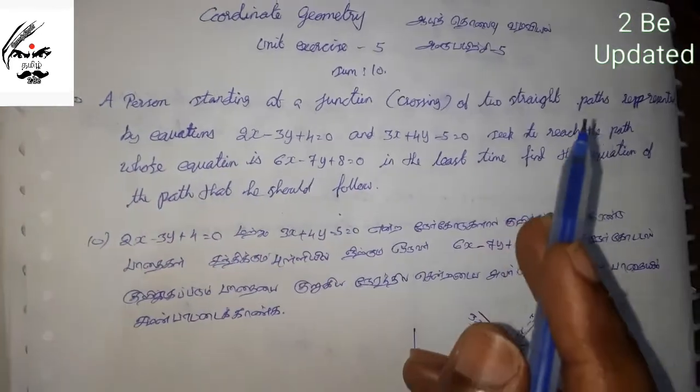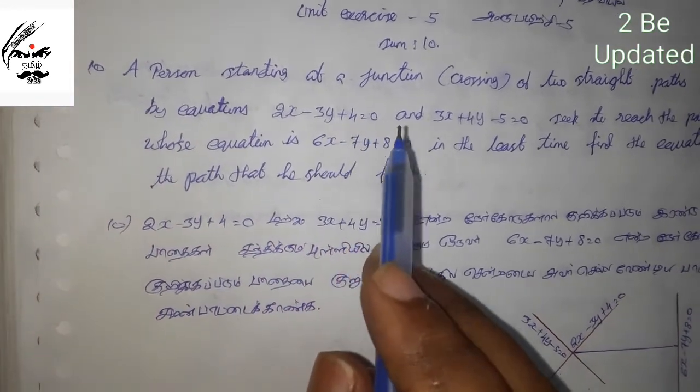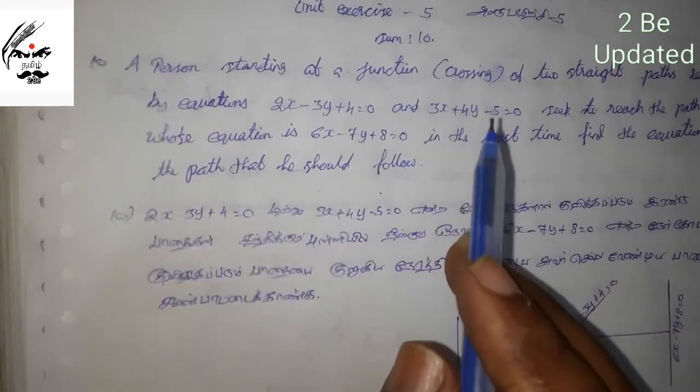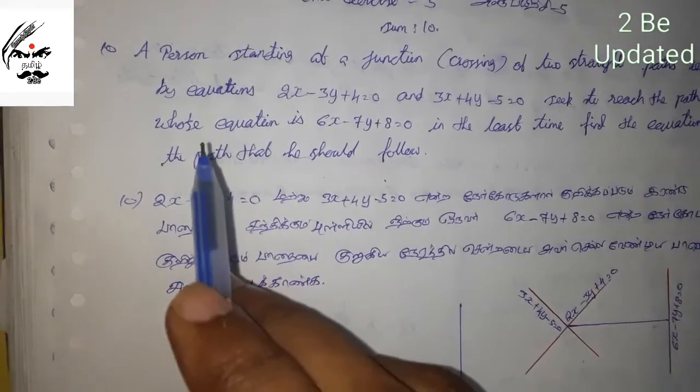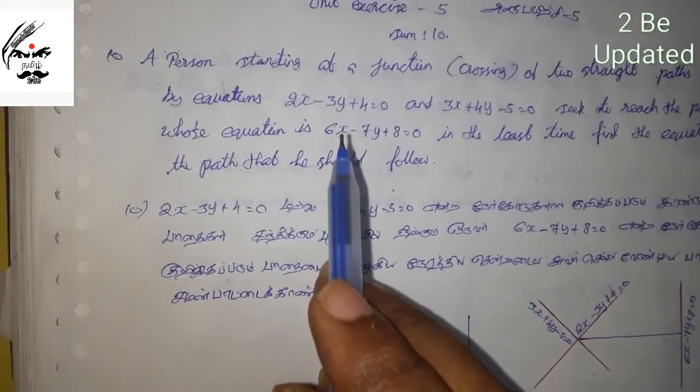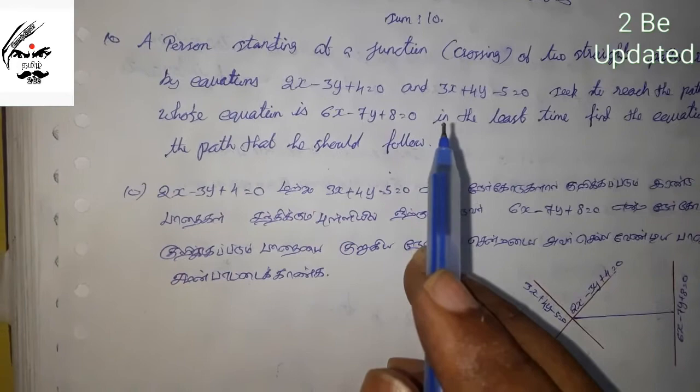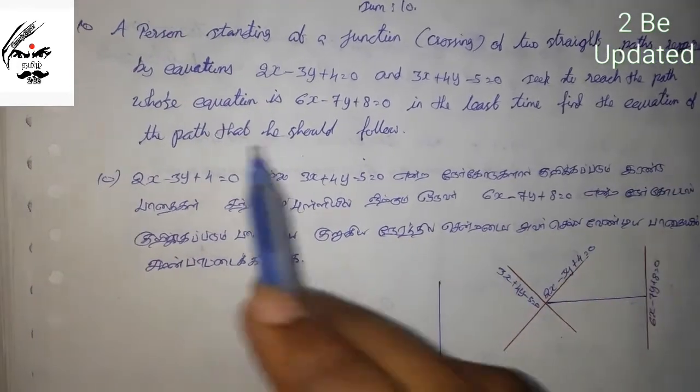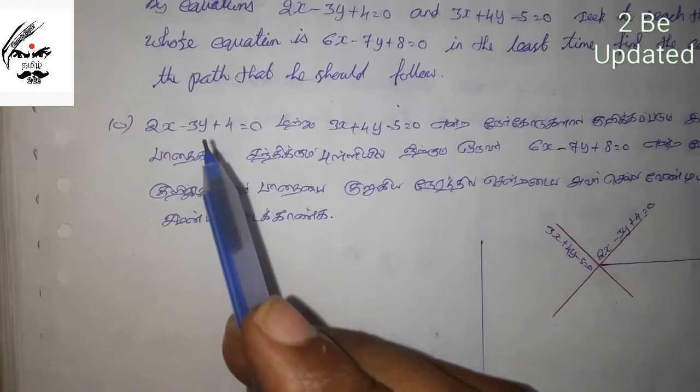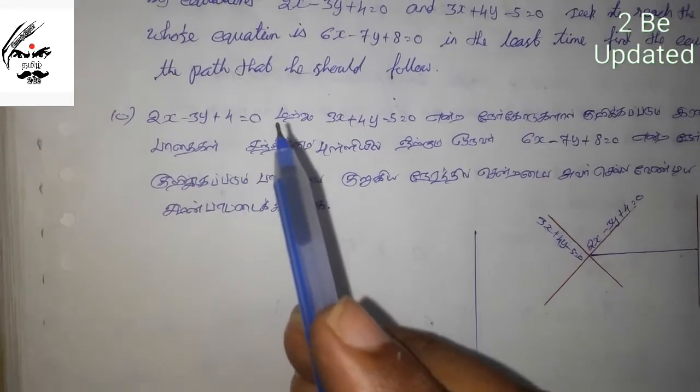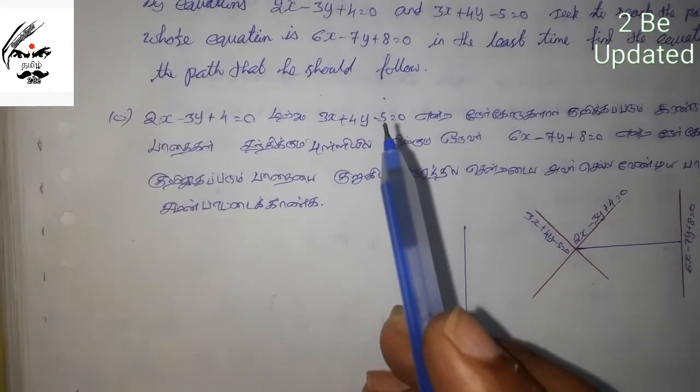A person is standing at a junction, crossing of two streets with paths given by the equations 2x minus 3y plus 4 equal to 0 and 3x plus 4y minus 5 equal to 0. He seeks to reach the path whose equation is 6x minus 7y plus 8 equal to 0 in the least time. Find the equation of the path that he should follow.